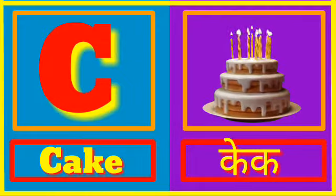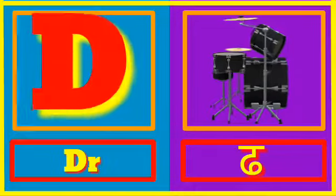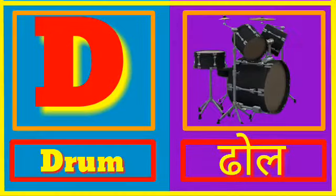C for Cake. Cake means Cake. D for Drum. Drum means Drum.